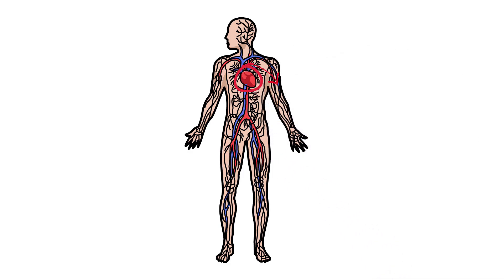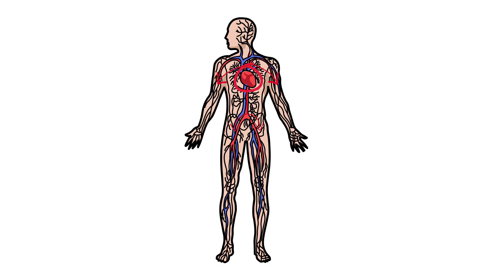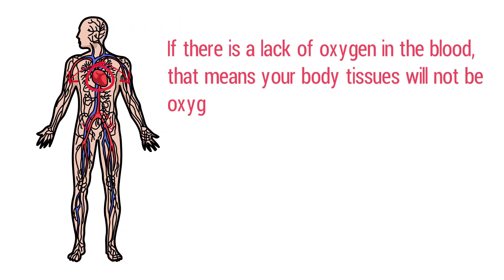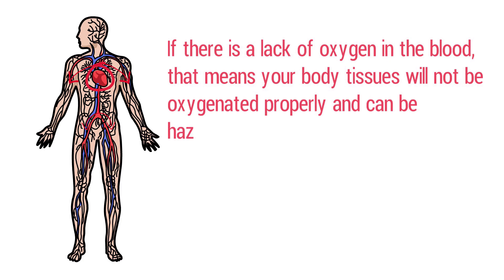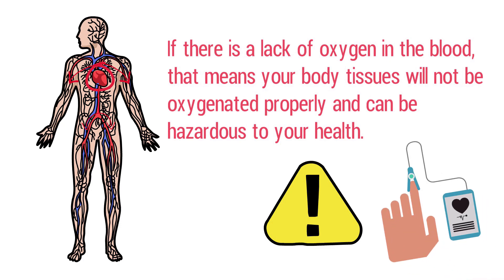Arterial blood flows to parts of the body from the heart, fresh with oxygen, where it diffuses to the surrounding tissues and cells. If there is a lack of oxygen in the blood, your body tissues will not be oxygenated properly, which can be hazardous to your health. This can be an indication of serious pulmonary issues, and that is why it's so important to use a pulse oximeter.